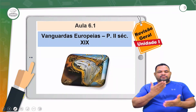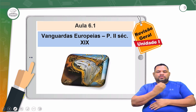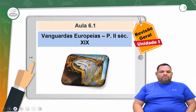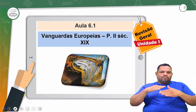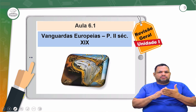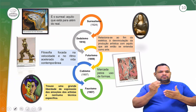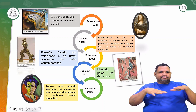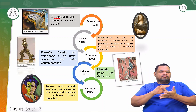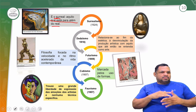Vamos para a aula 6.1 — Vanguardas Europeias, parte 2. Nós vamos aprofundar um pouco mais nos acontecimentos artísticos que foram acontecendo na Europa. Quando os artistas começam a enjoar de uma certa tendência, eles começam a pesquisar e buscar outras tendências. Vamos ver um mapa com cinco movimentos muito importantes. Começando com o surrealismo — o surrealismo é aquilo que é surreal, além do que é real. A gente vê, por exemplo, um relógio derretido, como nessa obra do Salvador Dalí.